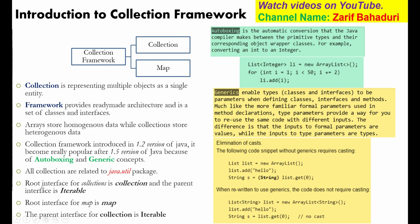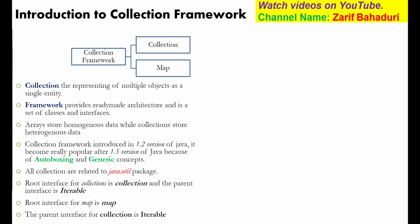The root interface for collections is Collection. This means that Collection is the top-level interface in the hierarchy. The parent interface of Collection is Iterable. So Collection extends Iterable, making Iterable the parent or father interface of Collection.